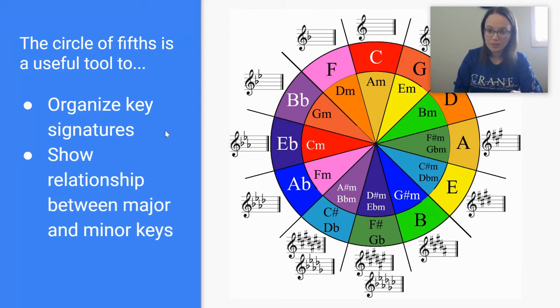And it shows the relationships between major and minor keys. Now we haven't talked about minor keys too much, but every major key signature has something called a relative minor. That means a minor key that shares the same key signature. We'll talk about this more in another video, but the trick to finding the relative minor is that it's the sixth note of that scale.